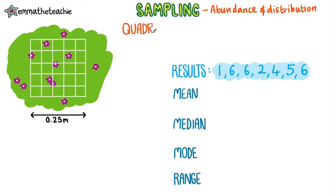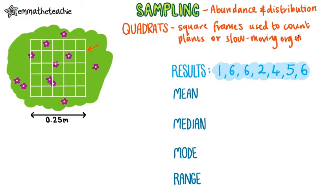Firstly, you can use quadrats. These are square frames that are laid on the ground. They may or may not have a grid inside them. You can then count the number of plants or slow-moving organisms inside them. For obvious reasons, they can't be used for large or quickly moving organisms.